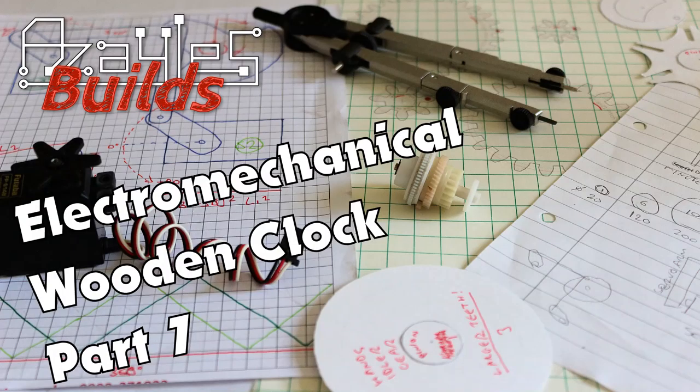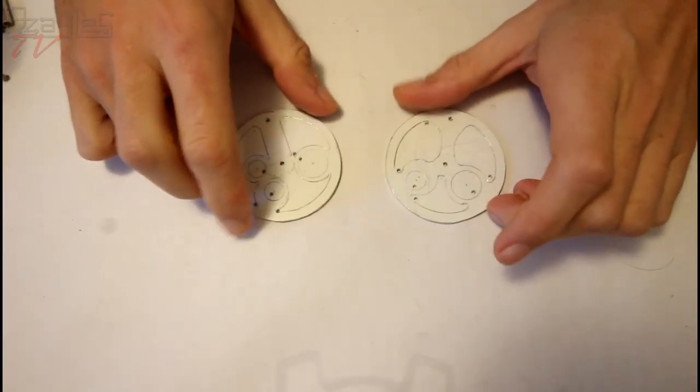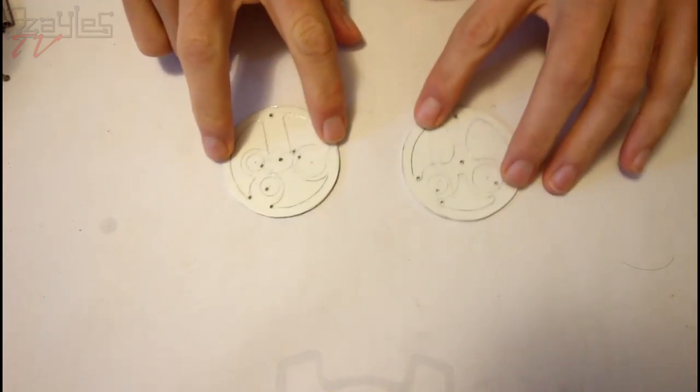Hello, welcome back to Rizal's TV. Let's jump straight into part 7 of my wooden electromechanical clock build. Let's start right from where we finished part 6 and cut the designs out of our crank arm wheels.